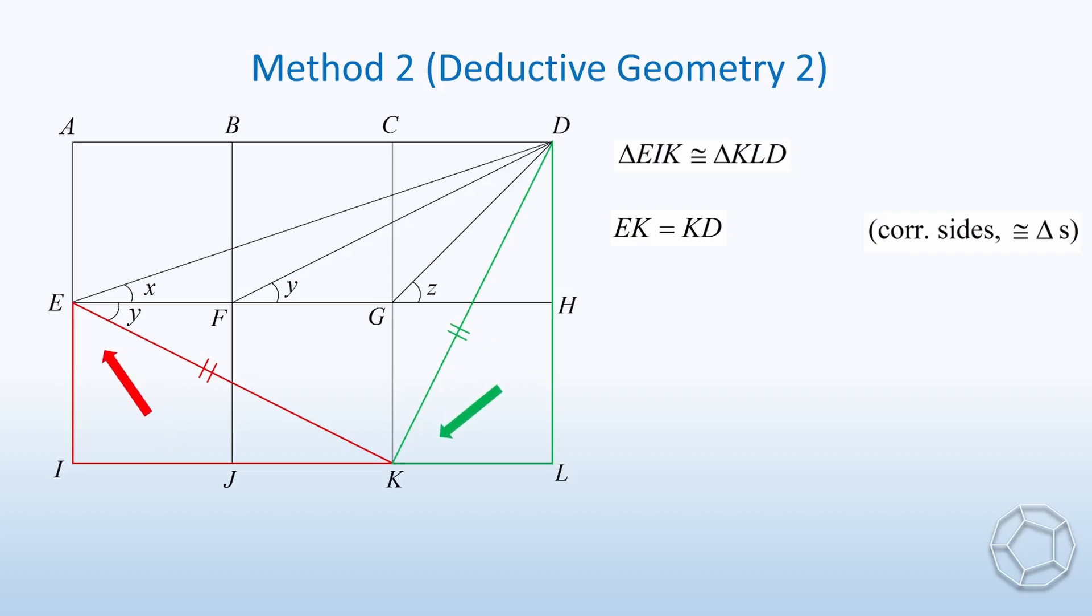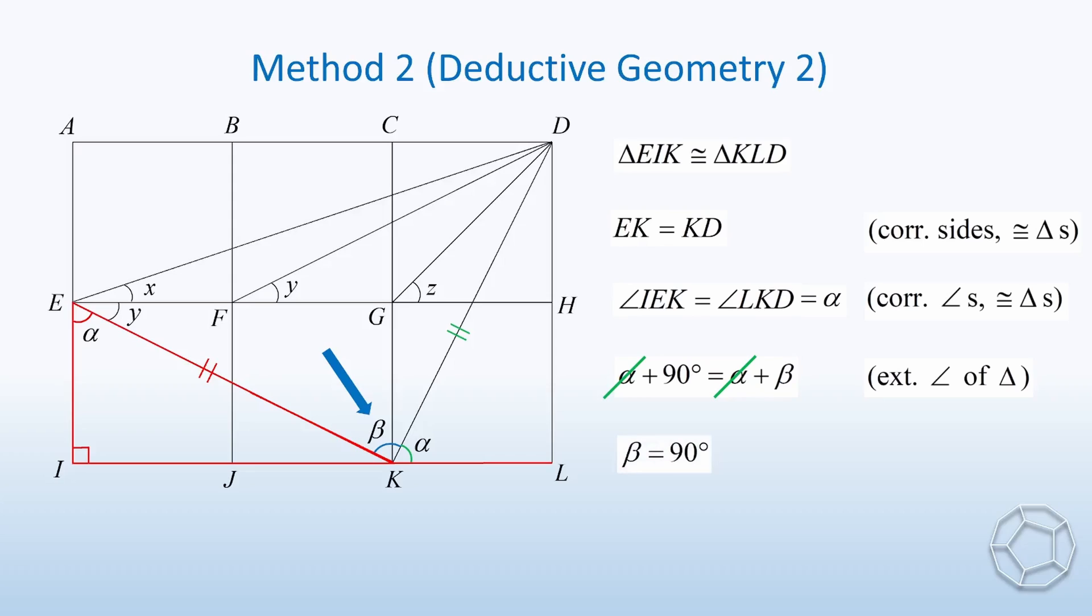Together with the right angle at the point I, we can figure out this blue angle at the point K. Let's call it beta. We look at the red triangle EIK and make use of exterior angle of triangle. Therefore, the sum of interior angles alpha plus 90 degrees is equal to the exterior angle, which is alpha plus beta. Cancel out alpha on both sides, we have beta is equal to 90 degrees.